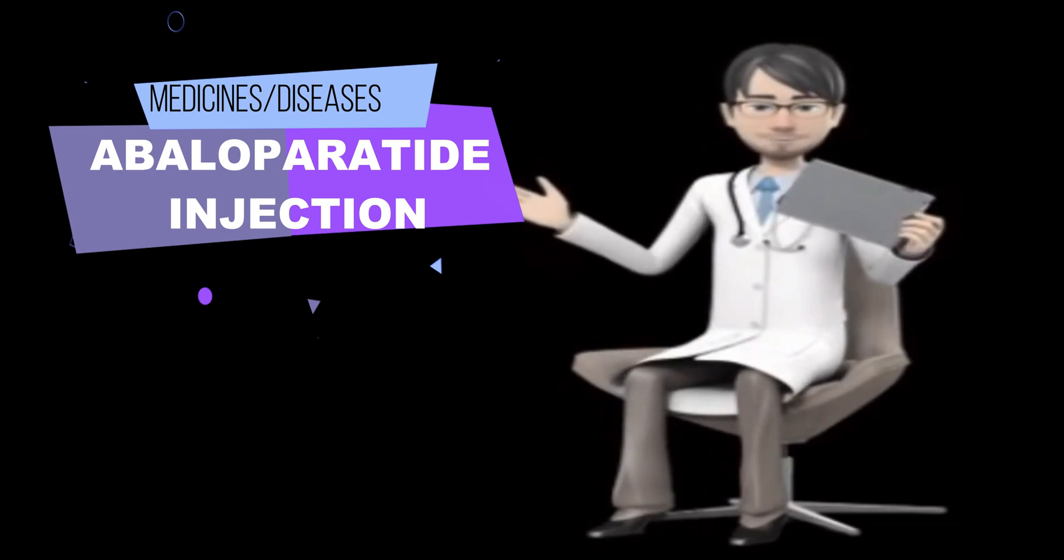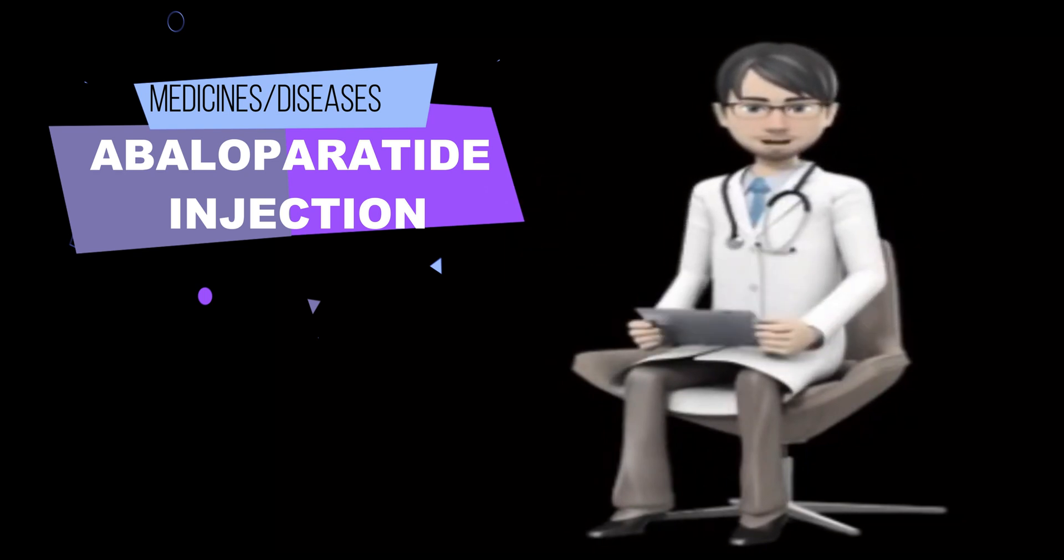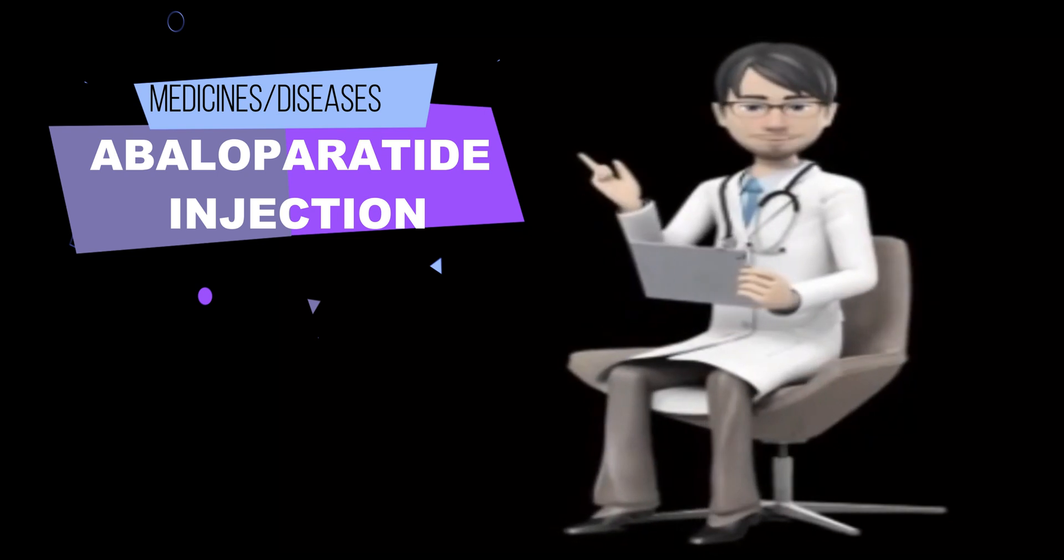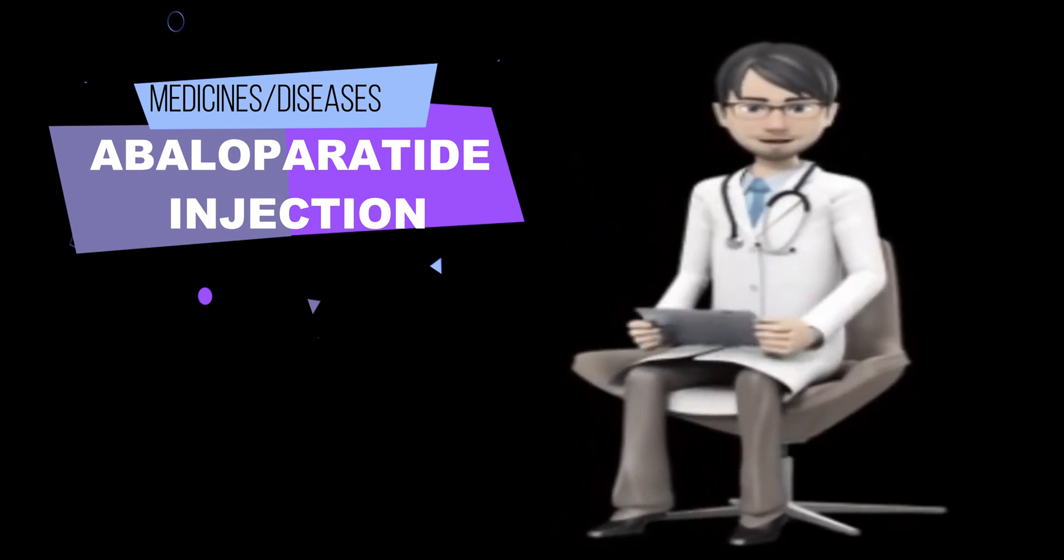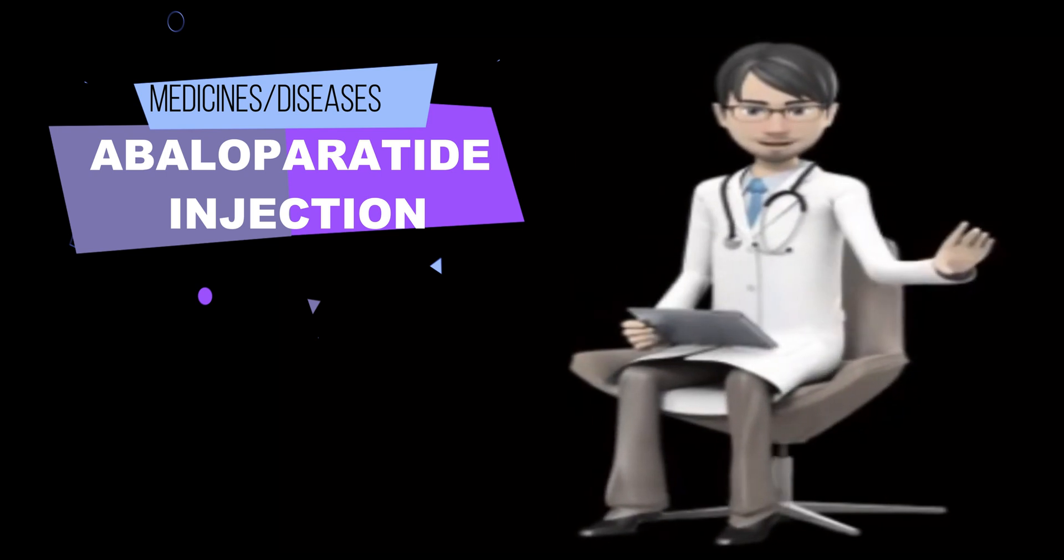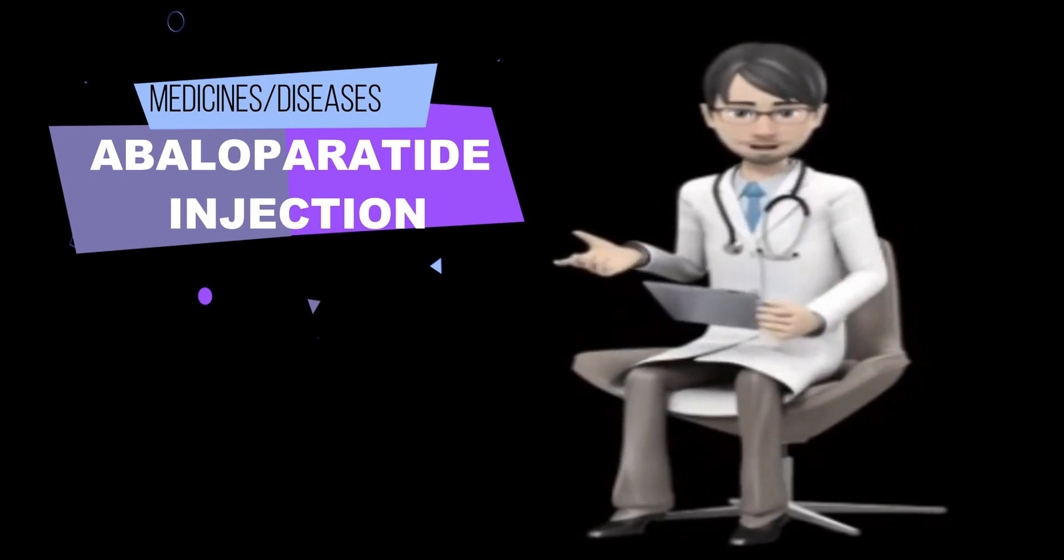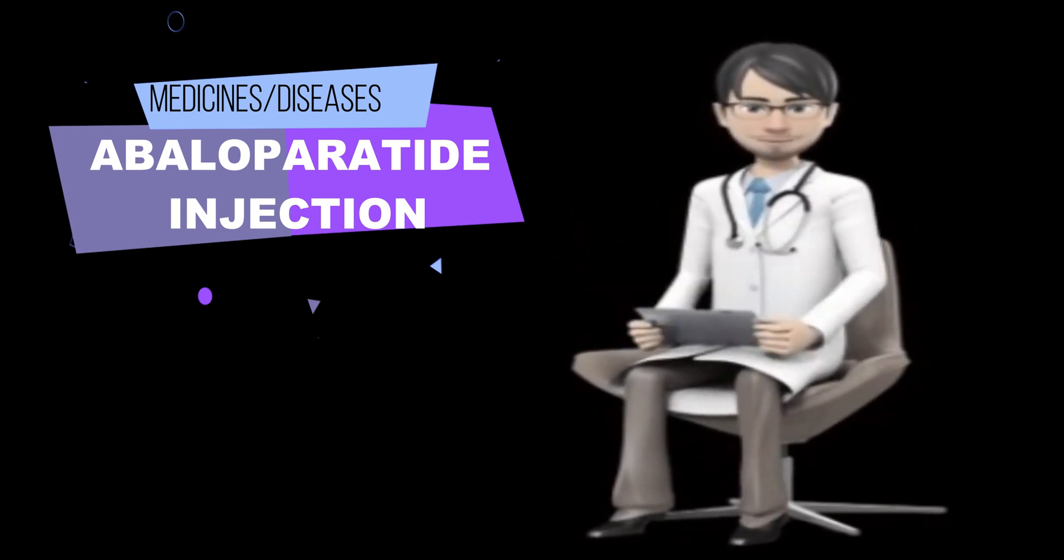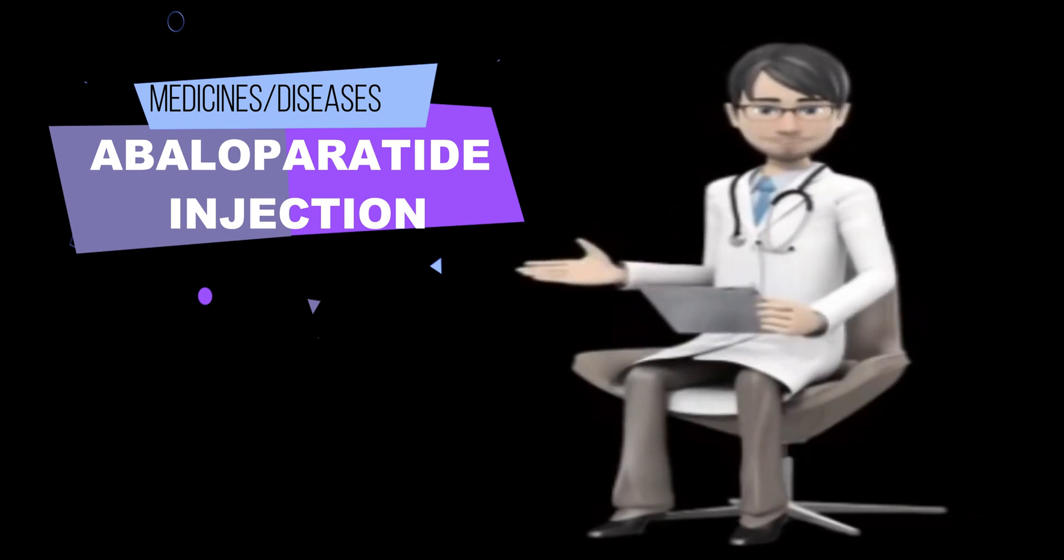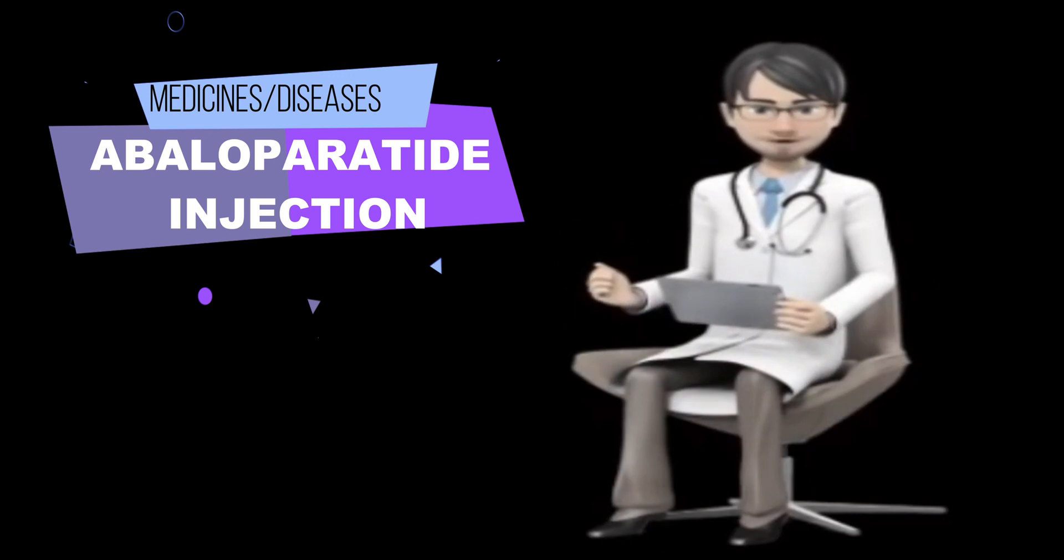How to use abaloparatide injection? Abaloparatide injection comes as a liquid to inject subcutaneously, under the skin. It is usually given once a day. Use abaloparatide injection at around the same time every day. Follow the directions on your prescription label carefully, and ask your doctor or pharmacist to explain any part you do not understand. Use abaloparatide injection exactly as directed.